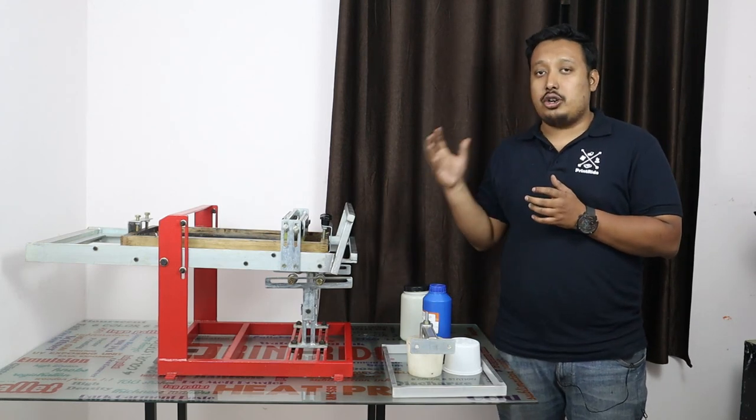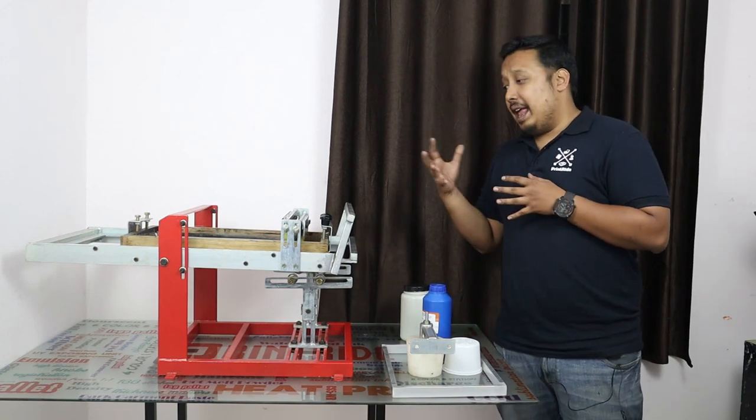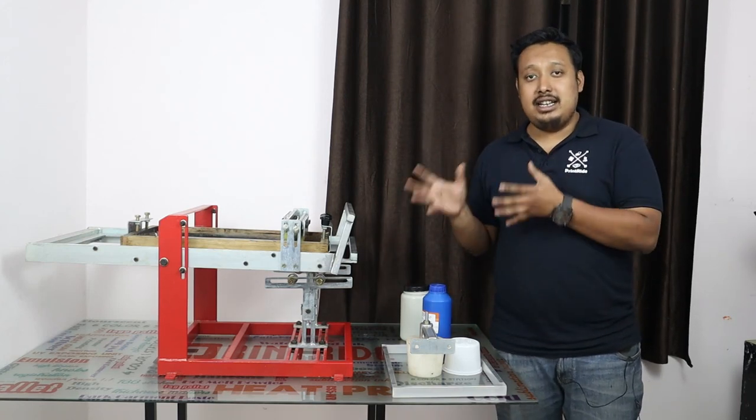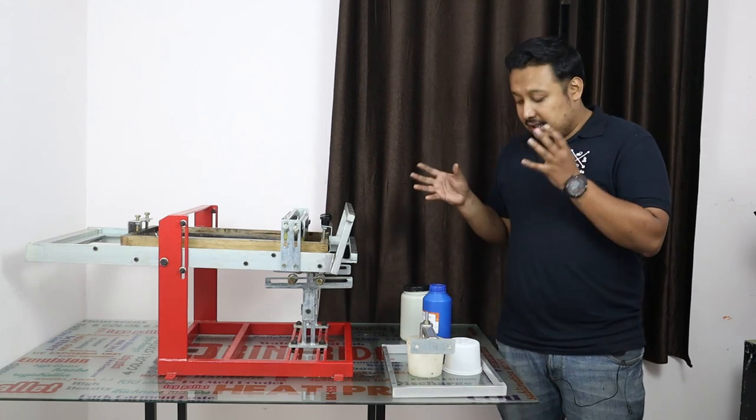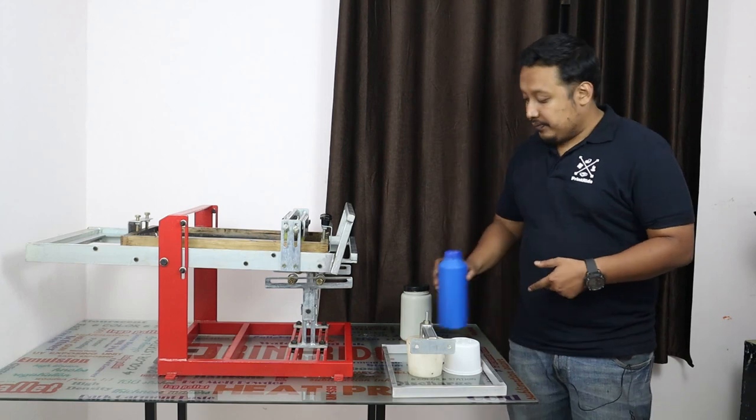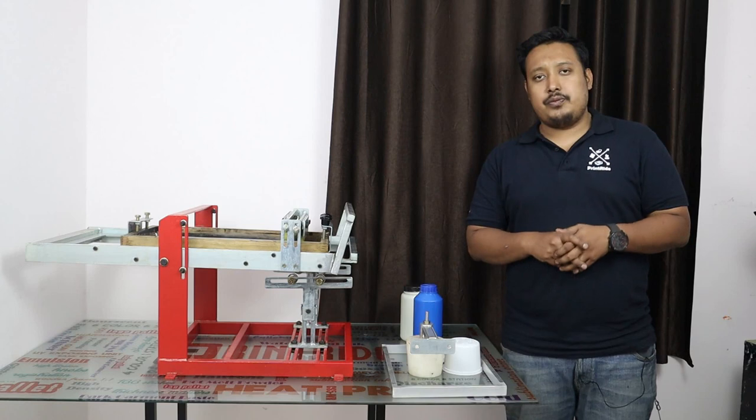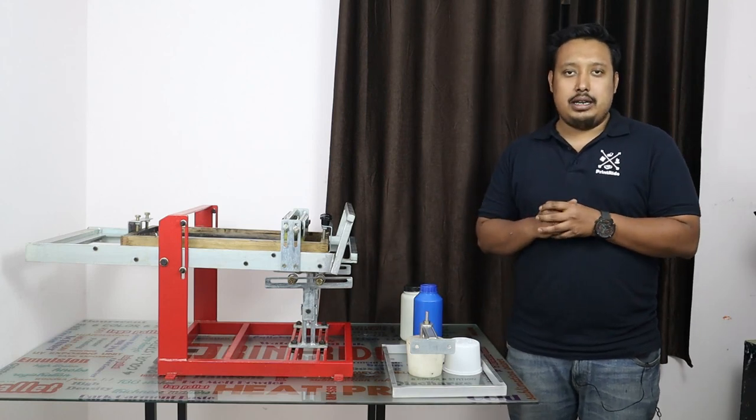This is a bottle screen printing machine, or in simple words, a cylindrical printing machine. This is used to print circular objects.